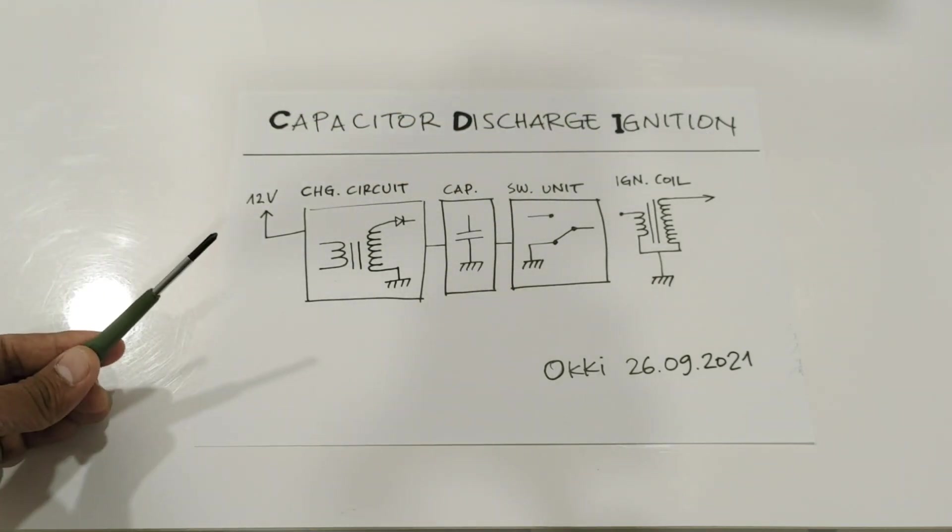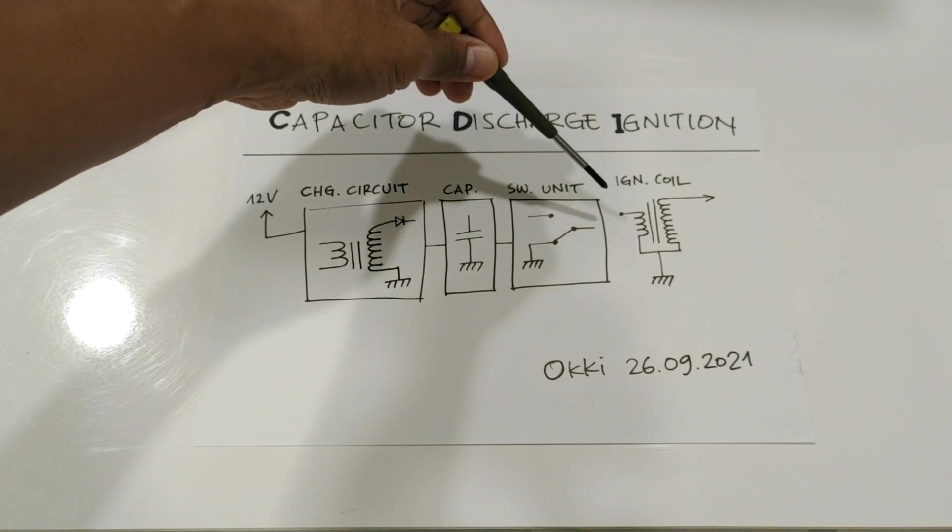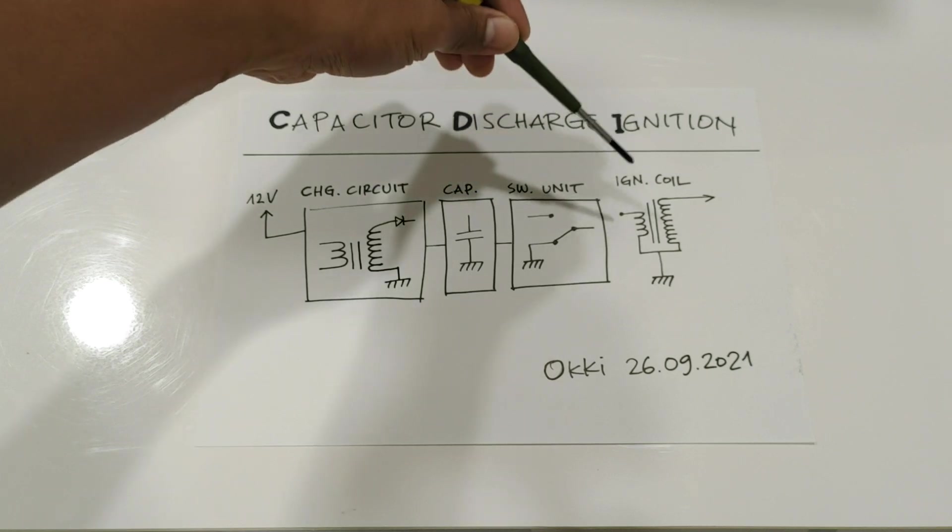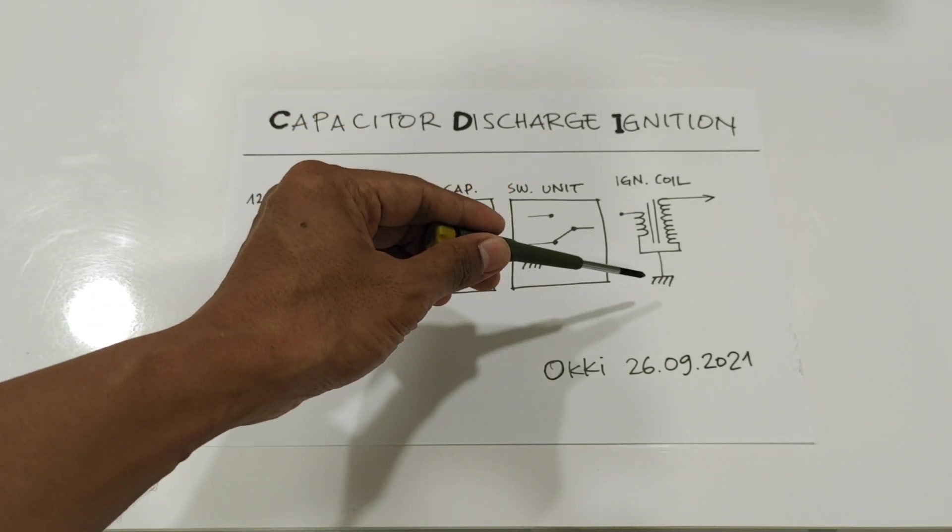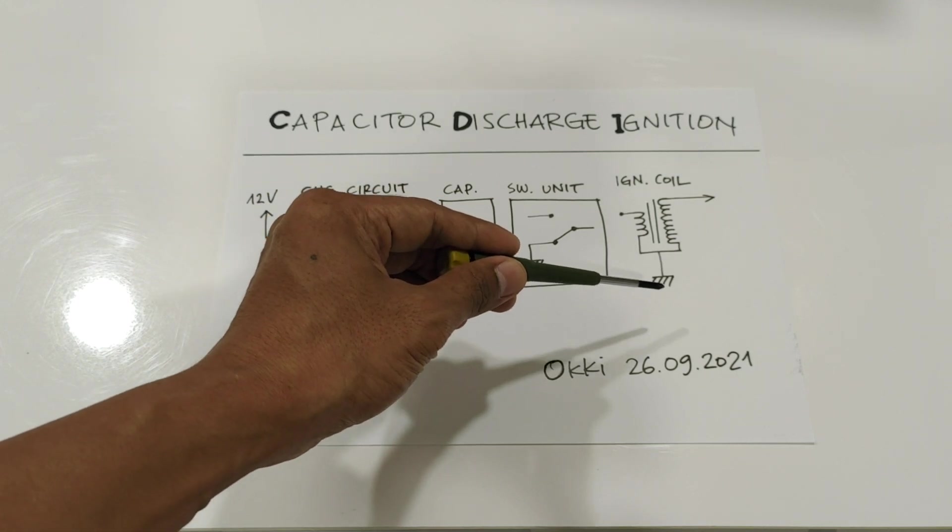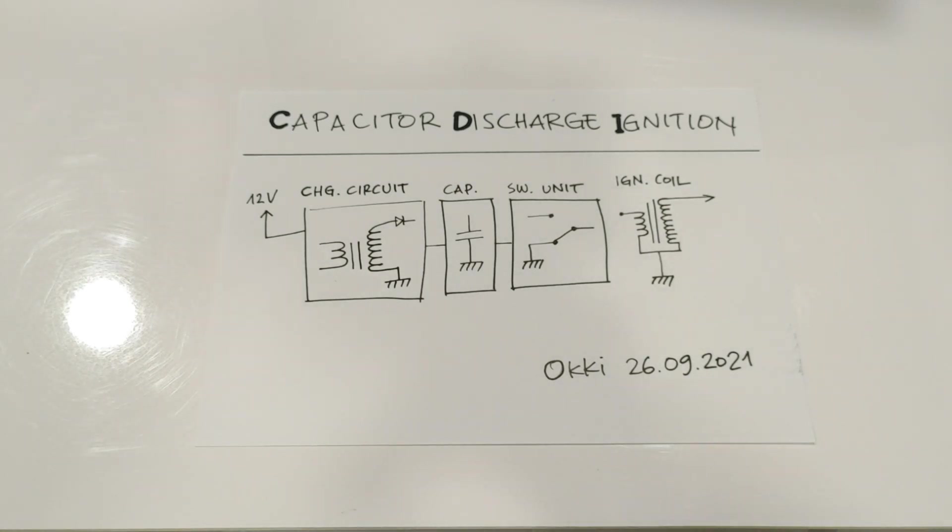On my CDI module I switch the positive part of the ignition coil and the negative terminal is connected directly to the ground.